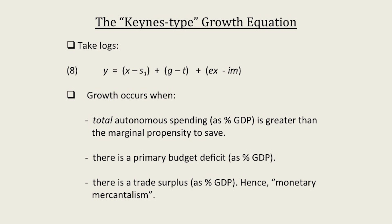Equation 8 says that growth occurs when total autonomous spending as a percentage of GDP is greater than the marginal propensity to save. This is the total autonomous spending as a percentage of GDP and it has to be greater than the marginal propensity to save — if so, there will be growth. Growth occurs if there's a primary budget deficit as a percentage of GDP, and growth occurs if there's a trade surplus as a percentage of GDP, hence monetary mercantilism.